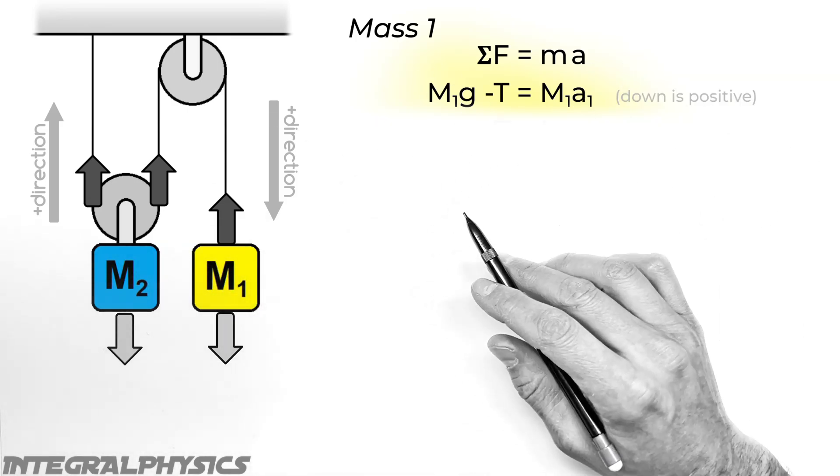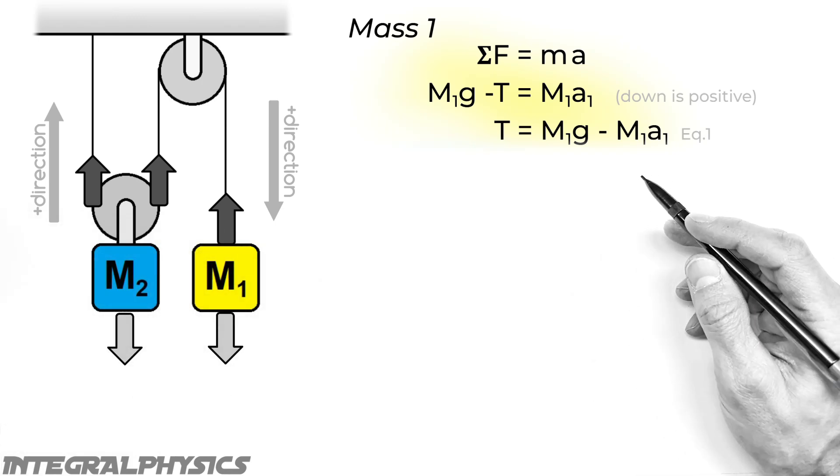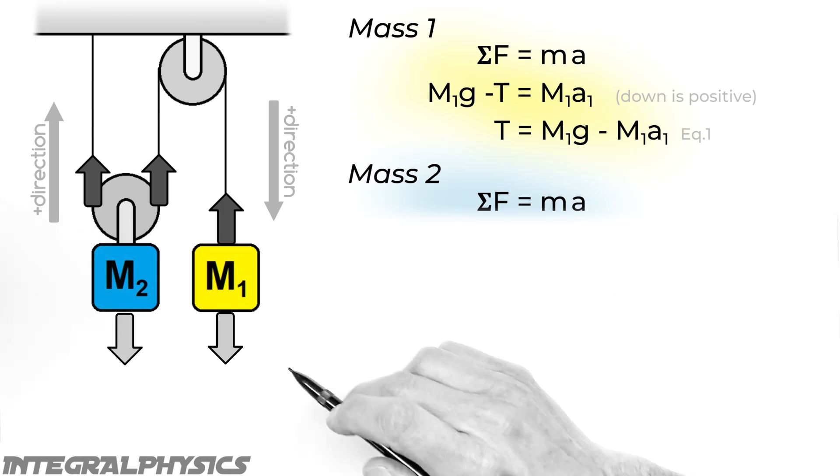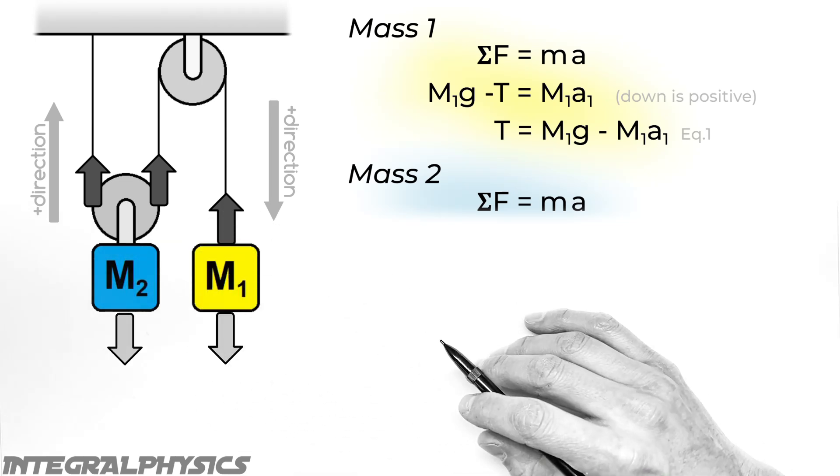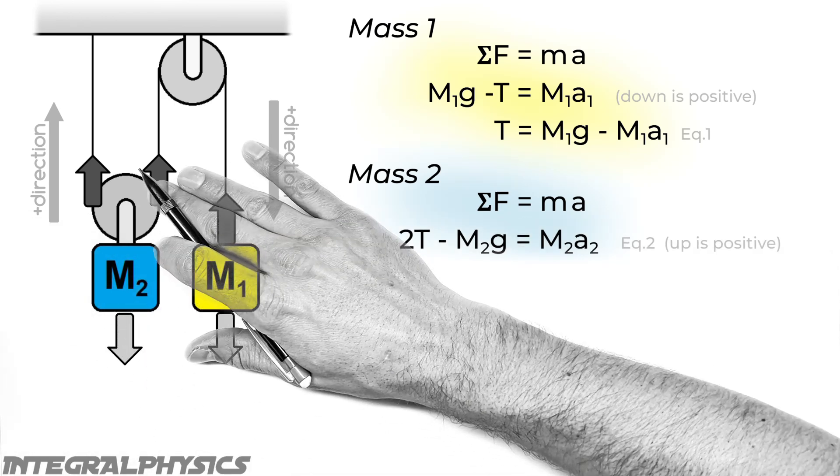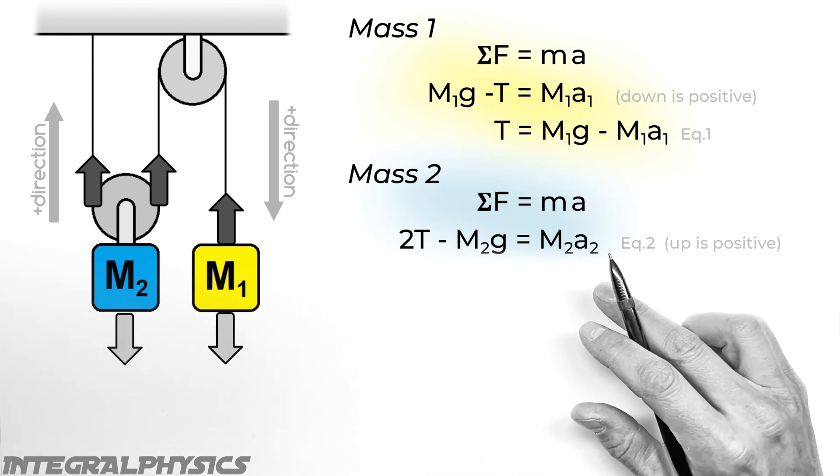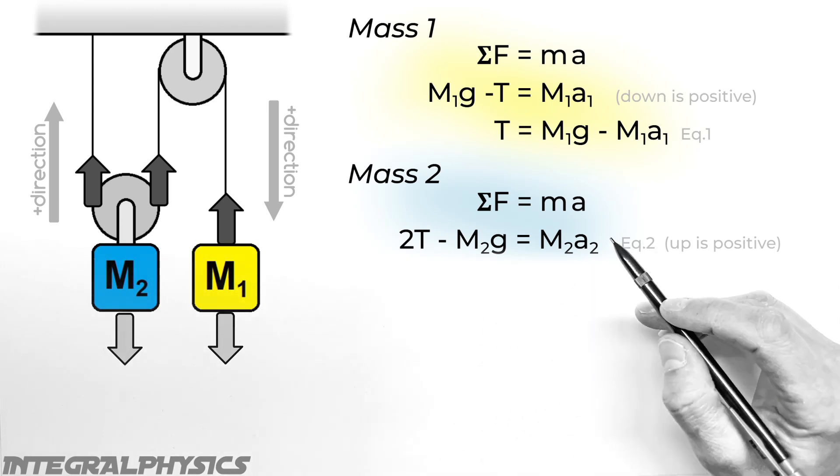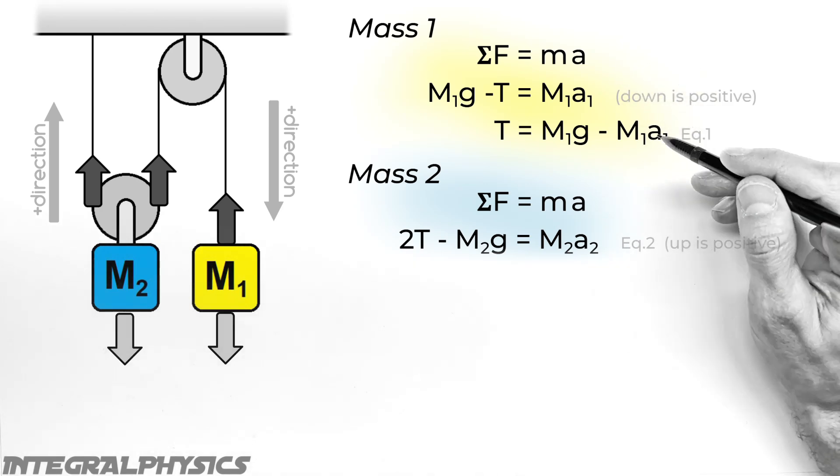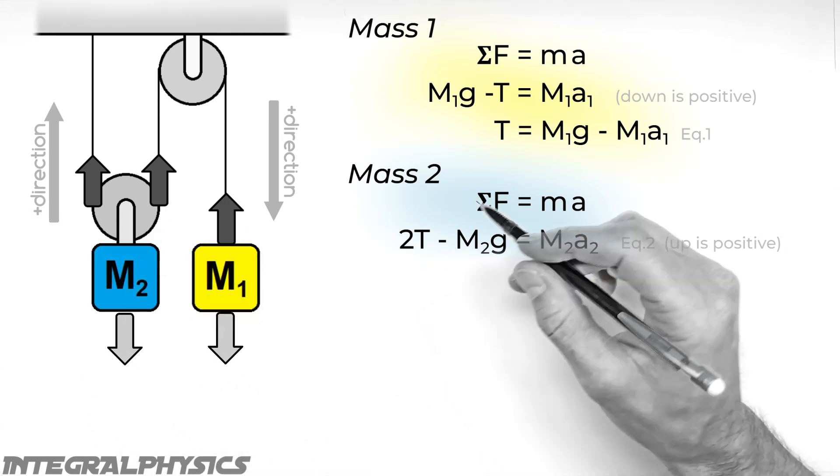Now again, I'm going to rearrange this for T. And we're going to use this equation later in the system of equations. Turning to mass two, we again have Newton's second law. And again, we have the tension acting twice upward on this block, and gravity acting downward. Now because this block is accelerating, we're going to say that net force is equal to M2A2. And again, be careful. A2 is not the same as A1. I know I keep bringing this up, but that's the central issue that creates problems for people in this type of question.